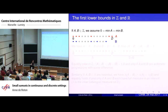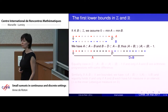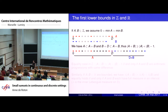Let's begin with the first lower bound in Z and R, which are easy bounds. If you take A and B as subsets of Z, by translation invariance you can assume the minimum is zero. Then you have a set A in red and a set B in blue. Looking at A plus B, you have at least A because zero is in B, so A is included in A plus B. And D plus B is included in A plus B where D is the maximal value of A. This gives the lower bound: the size of A plus B is at least the size of A plus the size of B minus 1.